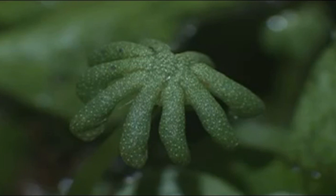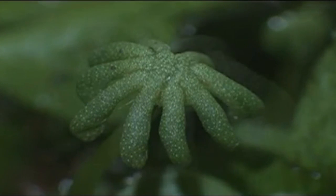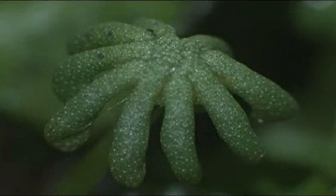As gametophyte plants are haploid, sperm and eggs are created by mitosis. After the sperm fertilizes the egg in the archegonia, the resulting zygote remains in the archegonia.